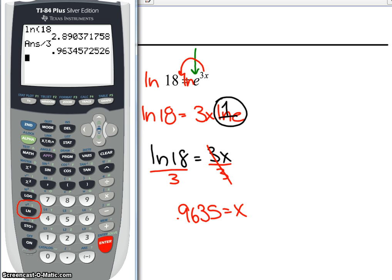Go back and check it. e, second natural log. And they already set the parentheses up for you. 3 times 0.9635. I think that's close to 18 because of round-off error, so we're good.